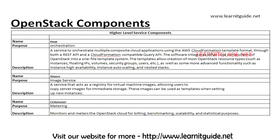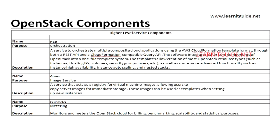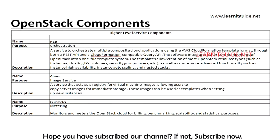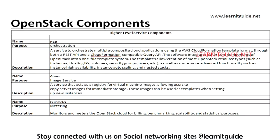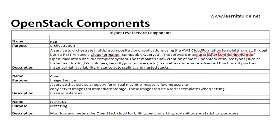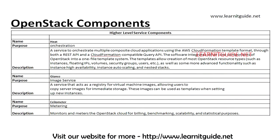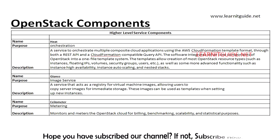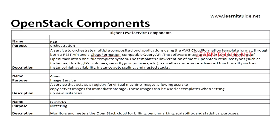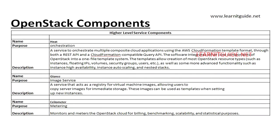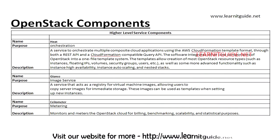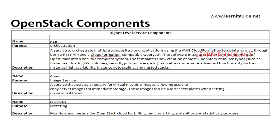Now the higher-level service components: Heat, Glance, and Ceilometer. Heat is used for orchestration — a service to orchestrate multiple composite cloud applications using the AWS CloudFormation template format through both a REST API and a CloudFormation-compatible query API. The software integrates other core components of OpenStack into a one-file template system. Templates allow creation of most OpenStack resource types such as instances, floating IPs, volumes, security groups, and users, as well as advanced functionality such as instance high availability, instance auto-scaling, and nested stacks.